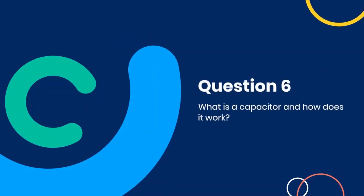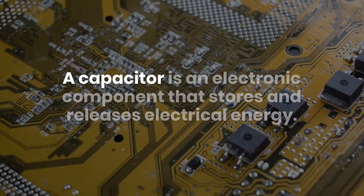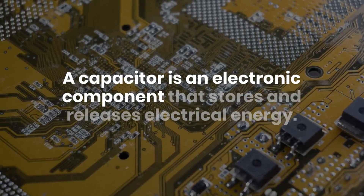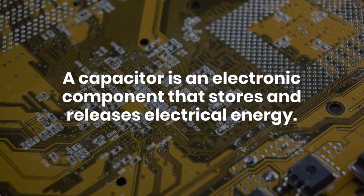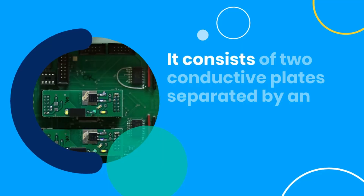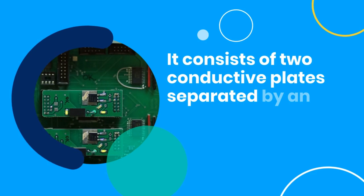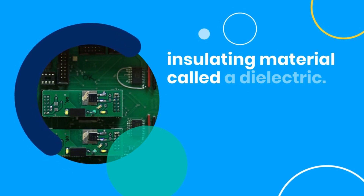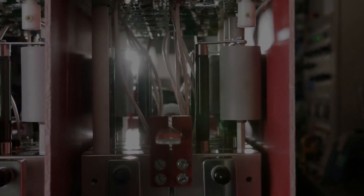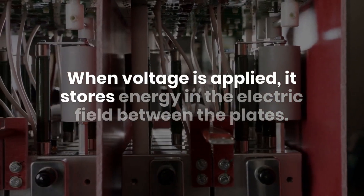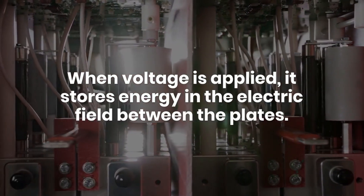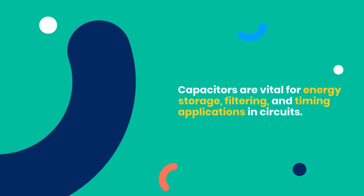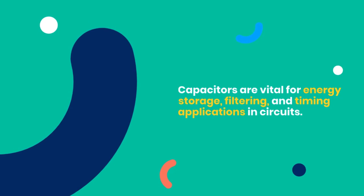Question six: What is a capacitor and how does it work? A capacitor is an electronic component that stores electrical energy. It consists of two conductive plates separated by an insulating material called a dielectric. When voltage is applied, it stores energy in the electric field between the plates. Capacitors are vital for energy storage, filtering, and timing applications in circuits.